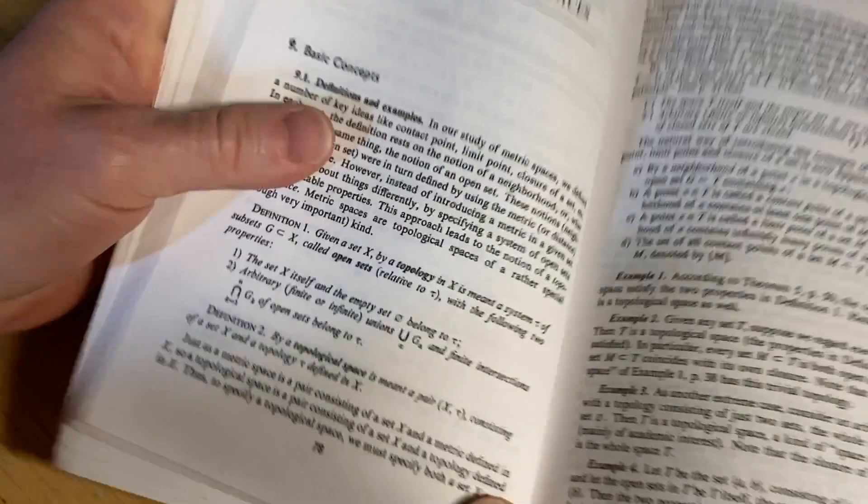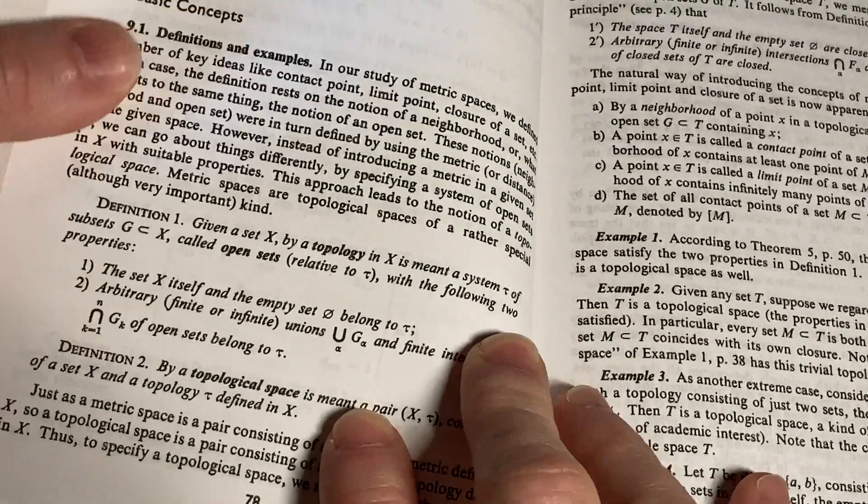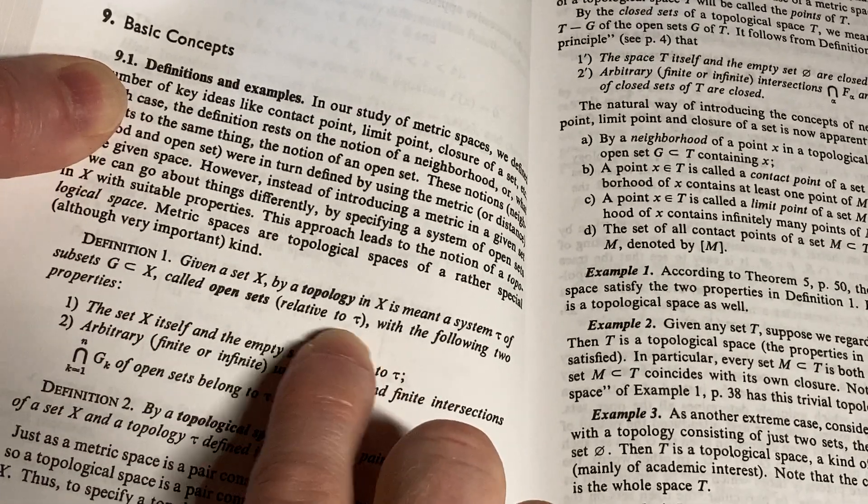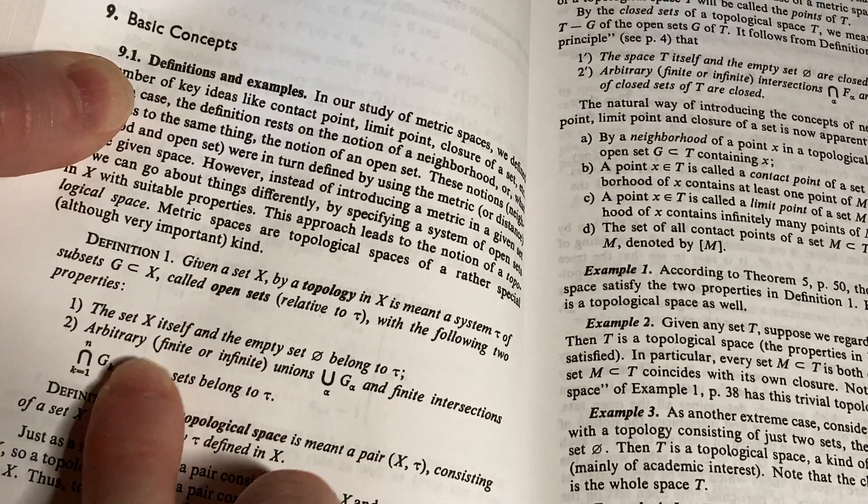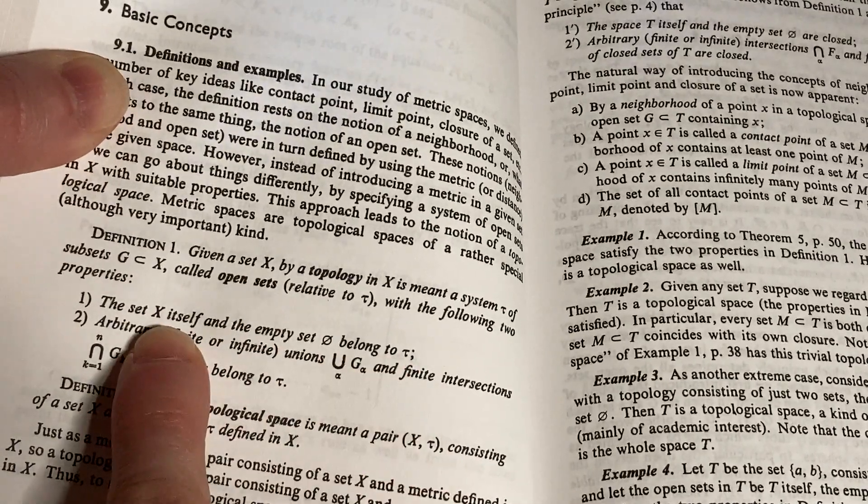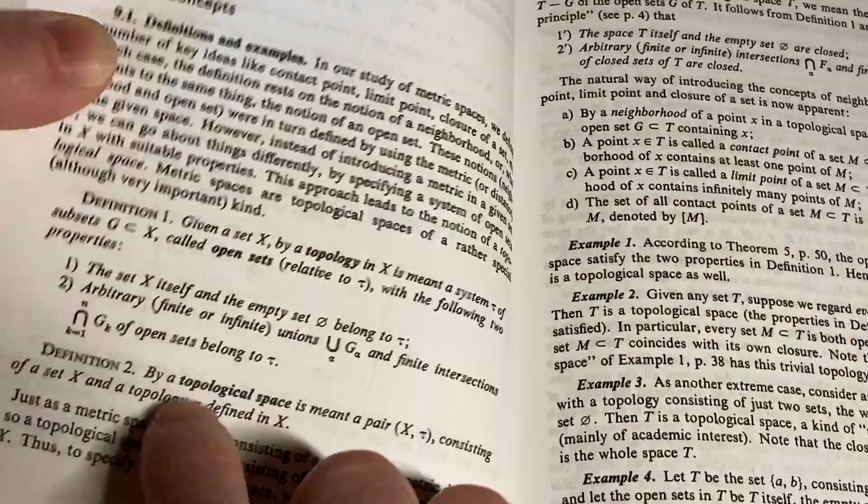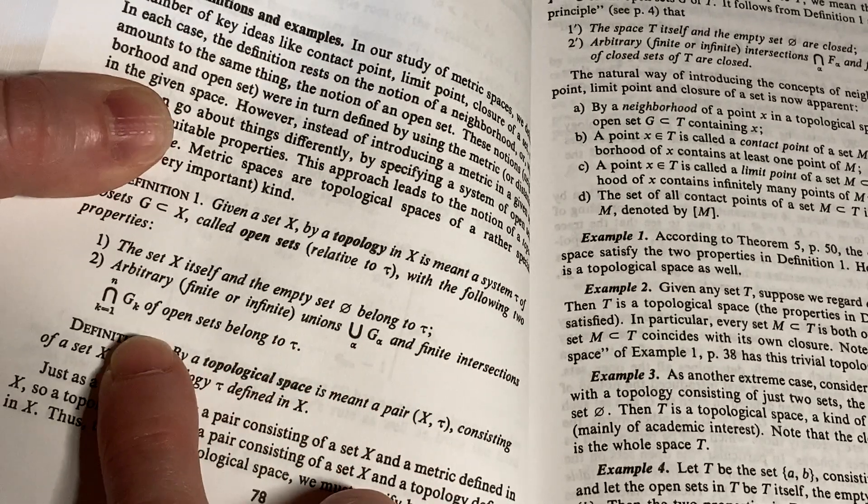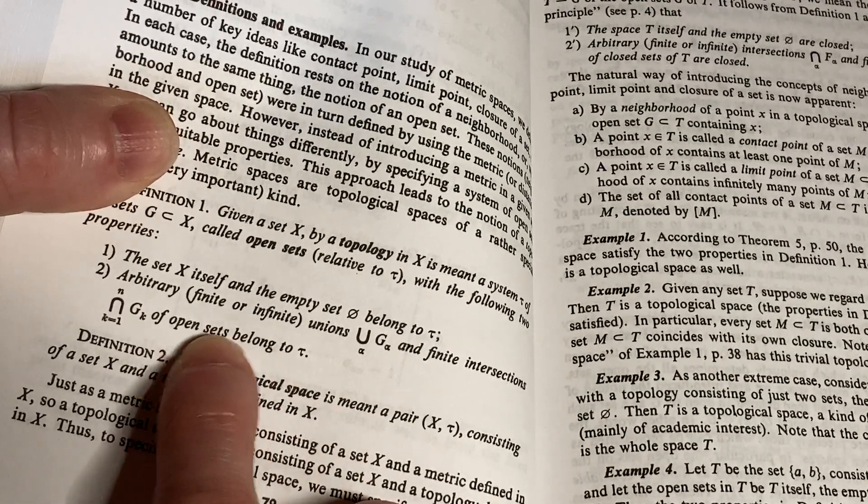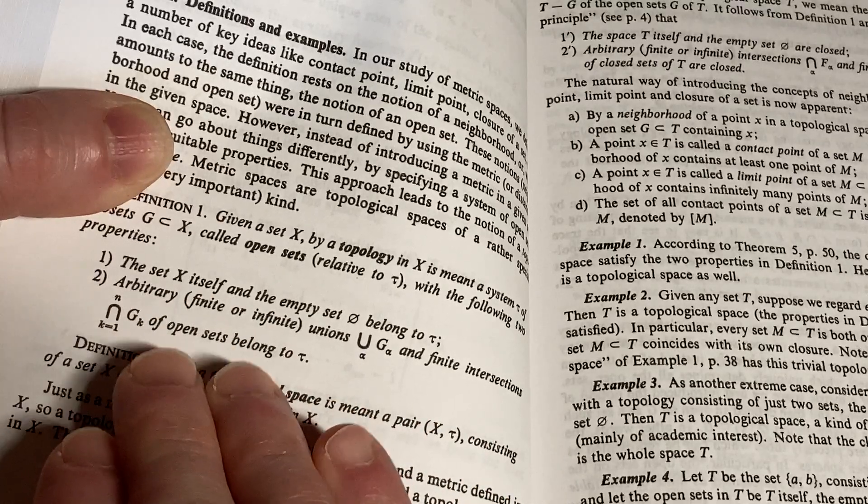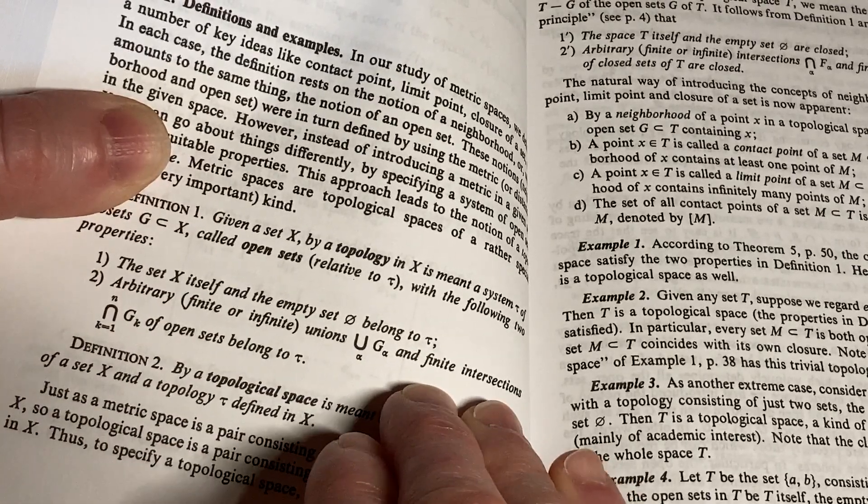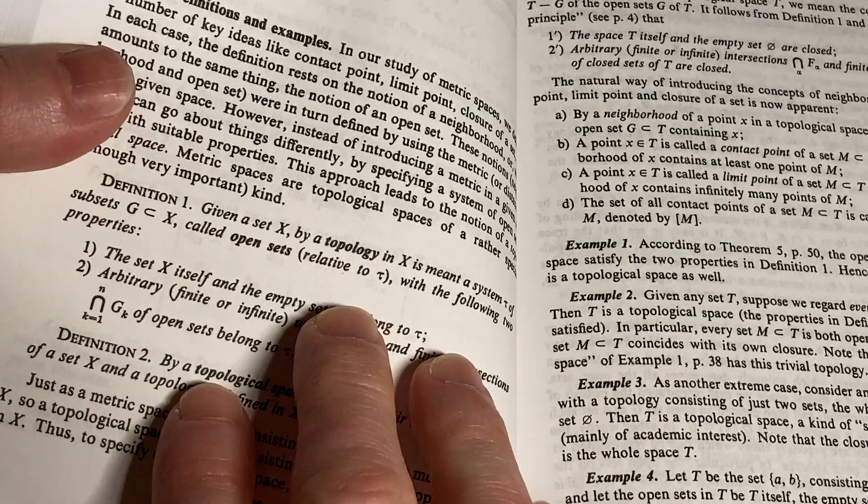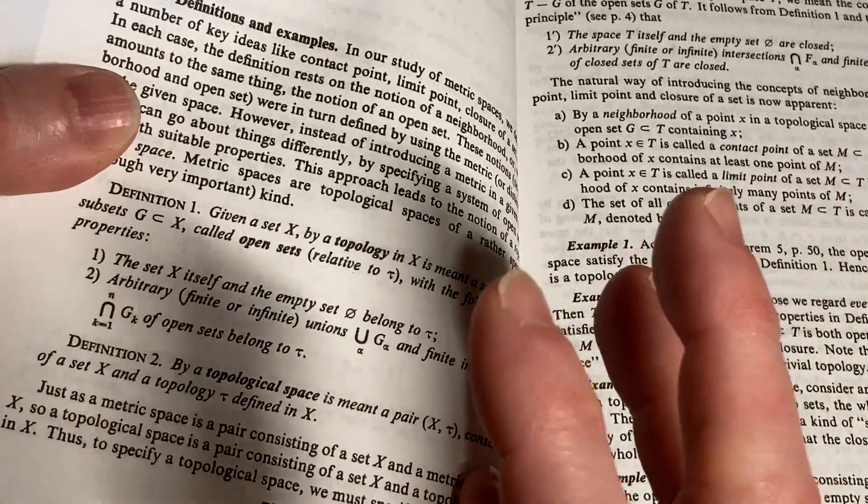Here it talks about topological spaces. Let's take a look at this. Definition one. Given a set X, by a topology in X is meant a system tau of subsets G of X called open sets relative to tau. Yeah, they're open in tau. Members of tau are called open sets with the following two properties. The set X itself and the empty set belong to tau. In other words, the set X itself and the empty set are open sets because open sets are the members of tau. Arbitrary finite or infinite unions of members of tau are in tau, and finite intersections of members of tau are in tau. You can actually read. This can be done a couple ways. Actually, I've seen a book that does it for, instead of saying finite, it does it for two, and then you can generalize that via induction for any finite number for the intersections.